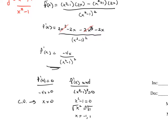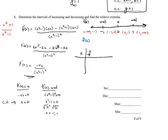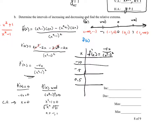We create a number line broken at negative 1, 0, and 1. The derivative f prime of x is undefined at negative 1 and 1, and equals 0 at x equals 0. This gives four intervals: negative infinity to negative 1, negative 1 to 0, 0 to 1, and 1 to infinity. We'll determine the behavior of the original function by checking the sign of the derivative in each interval. Test values chosen are negative 10, negative 0.5, 0.5, and 10.